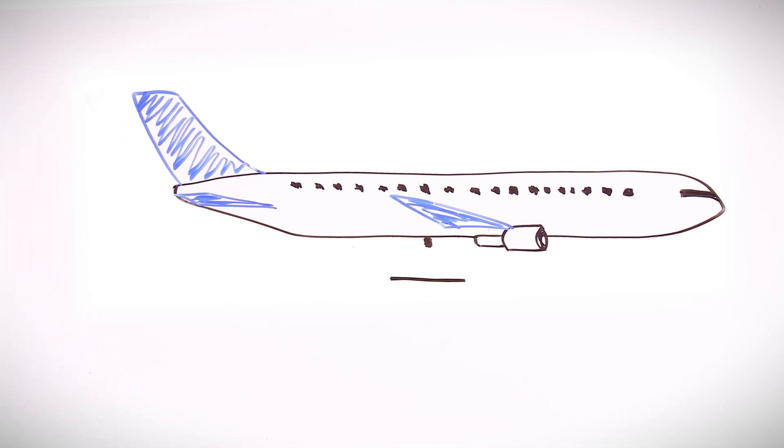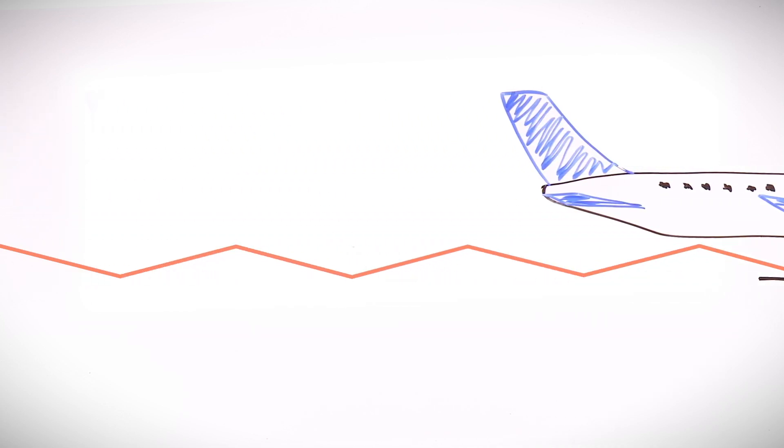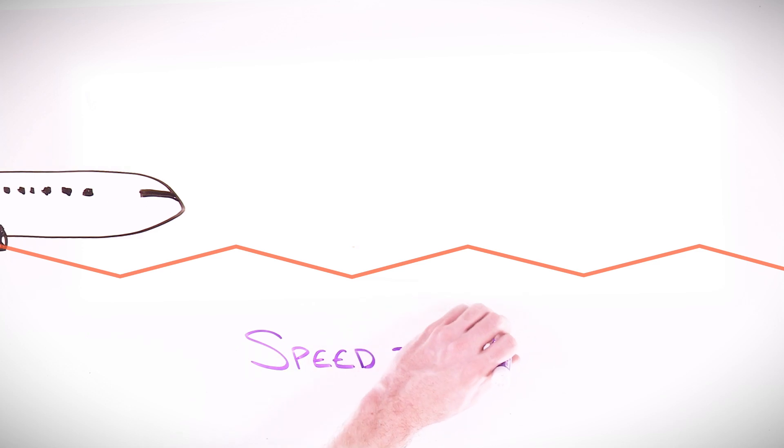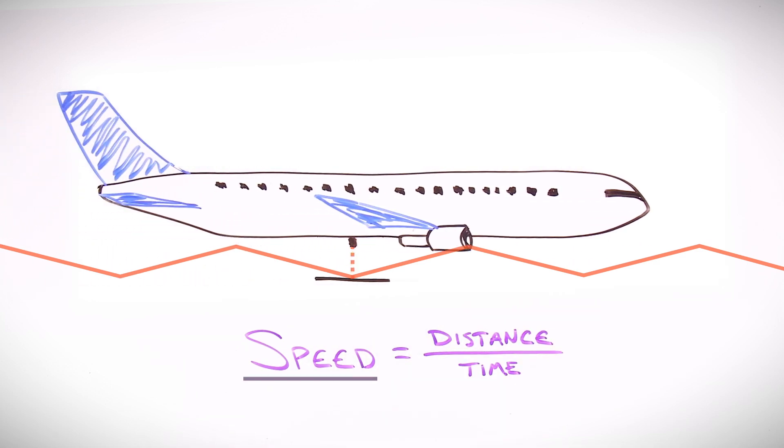But if you're watching this occur from the ground, you'd see the beam traveling in more of a triangular path, covering more distance. We know that speed equals distance over time, and the speed of the plane and of the light beam is fixed. So if distance is increasing, it must mean that time is too.